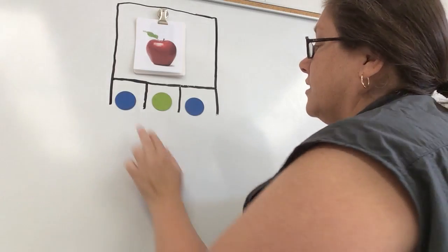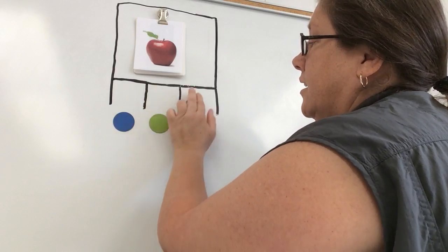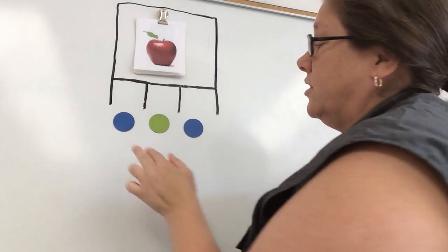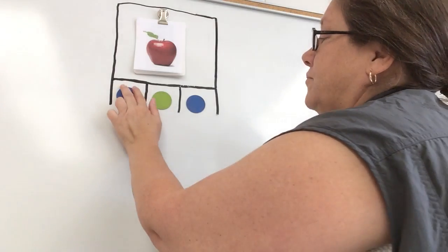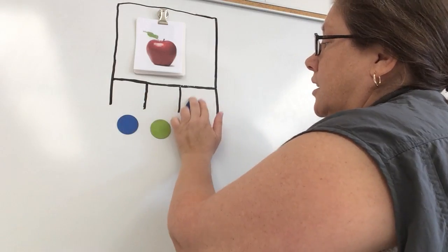Let's say the sounds together. A, P, L. Now it's your turn. And let's do the sounds together. A, P, L.